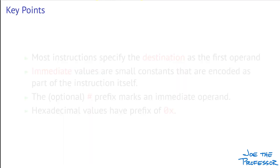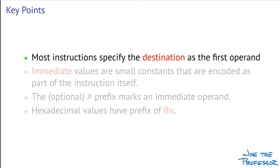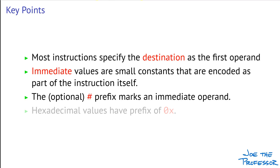What are the key points? Keep in mind that most instructions in the Cortex-M instruction set specify the destination as the first operand. Remember that an immediate value or immediate operand is a small constant that is encoded within the instruction encoding itself. Sometimes we'll use the hash symbol to prefix an immediate operand, but this isn't always required for the GNU assembler. And remember that whenever you see a prefix of 0x for a value, it tells you that that value is written as a hexadecimal value, base 16, rather than a decimal value.